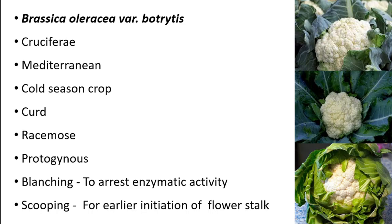Here comes the most important practice in cauliflower, which is blanching. Blanching in cauliflower is done to protect the curds from becoming yellow or brown in color — it arrests the enzymatic activity and stops the curd from becoming brown. There are some self-blanching varieties which are Pusa Himjyoti and Pusa Snowball.